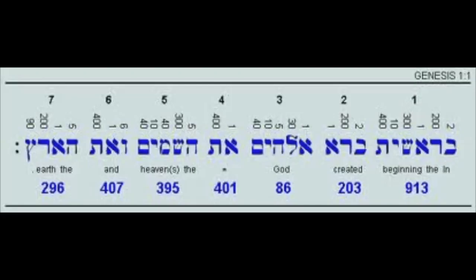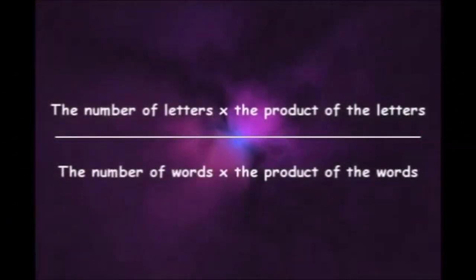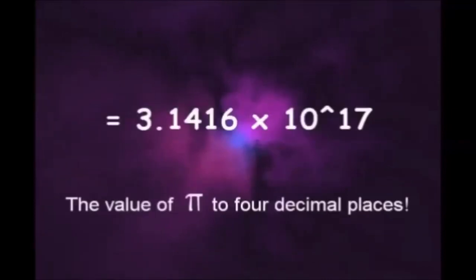So if we examine the text of Genesis 1:1 in Hebrew, we discover something amazing. If we take the number of letters multiplied by the product of the letters, then divide it by the number of words multiplied by the product of those words, we get pi.